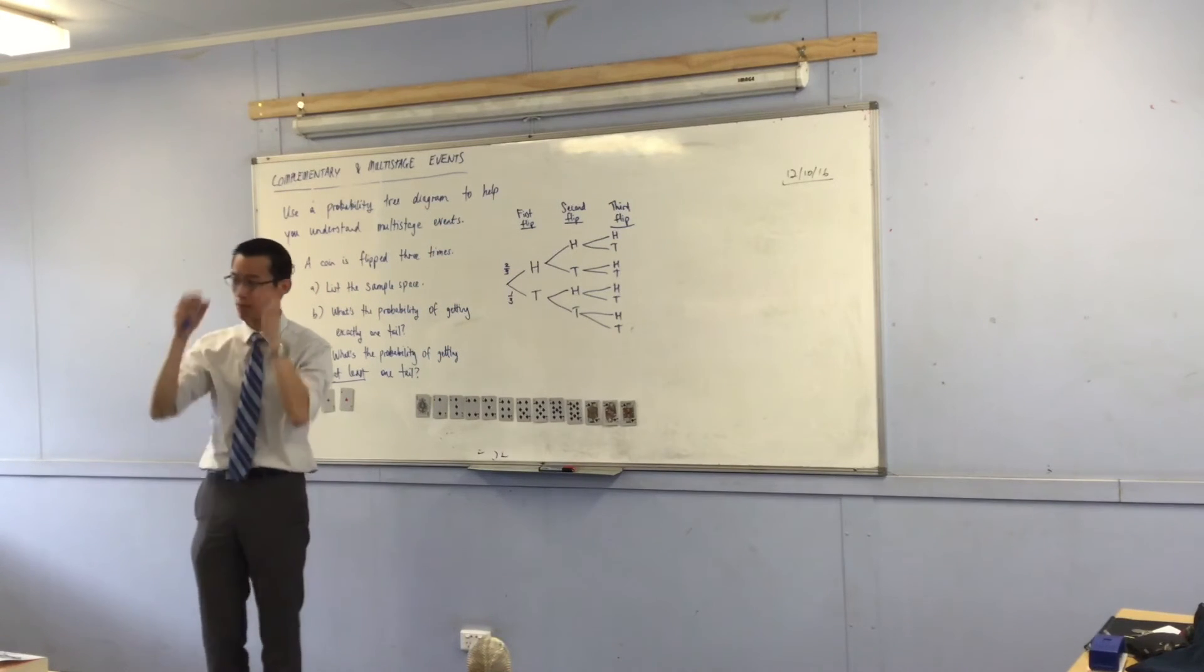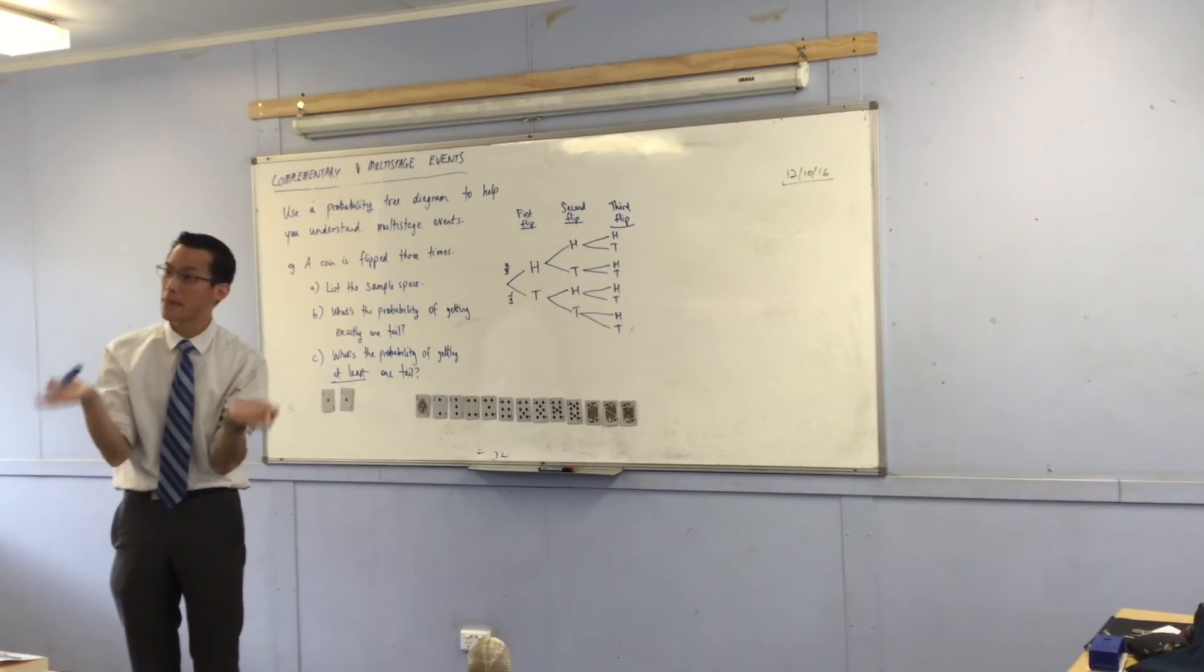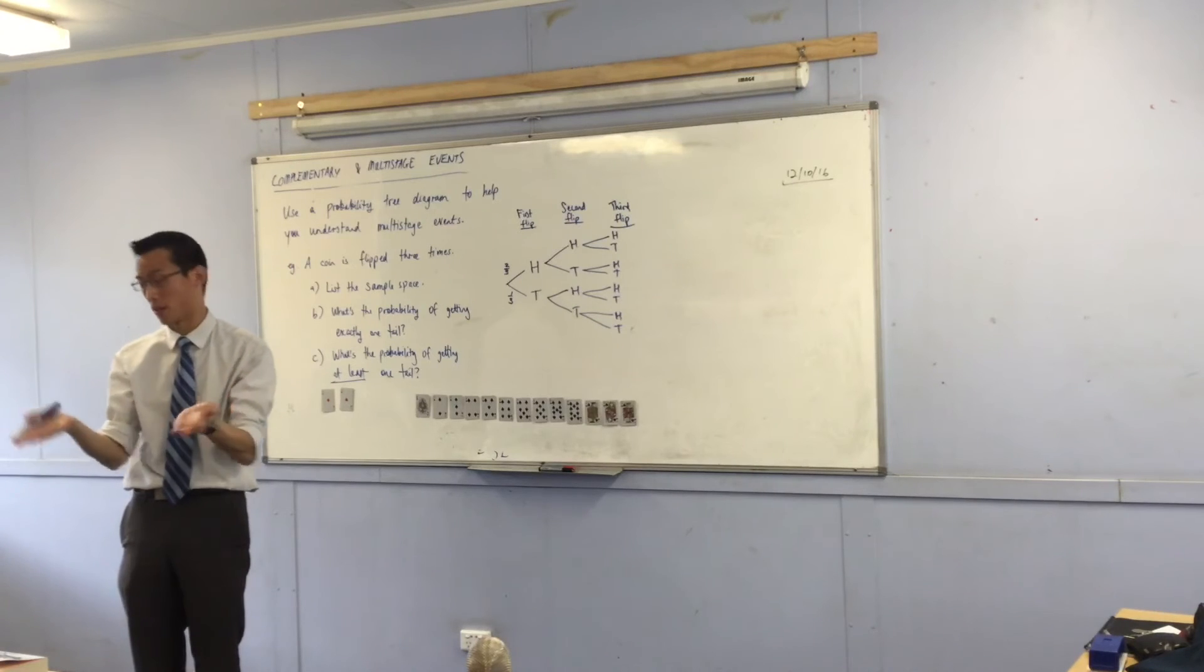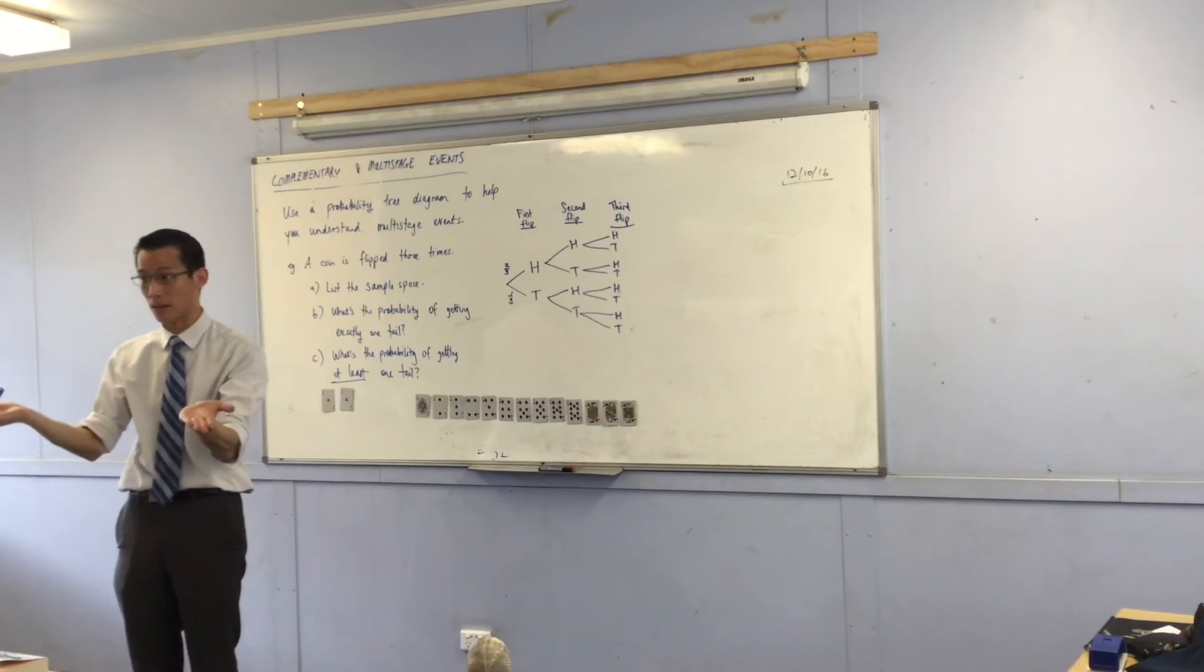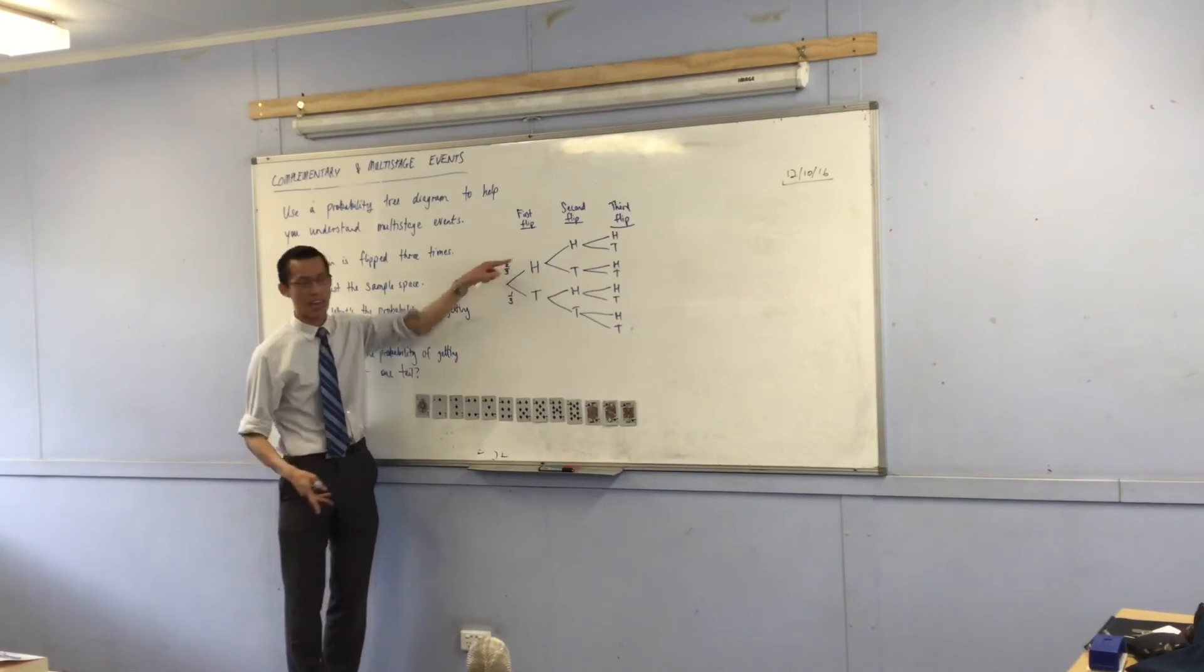There was a question you did earlier, I hope, which said, tomorrow it will either rain or not rain. Does that mean there's an even chance, a 50-50 chance of it raining or not raining? Because look, there's two outcomes.